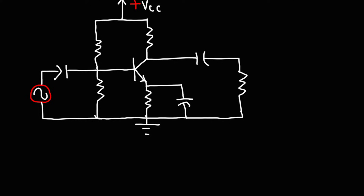In this video, I'm briefly going to review the characteristics of the common emitter amplifier, the common base amplifier, and the common collector amplifier. The amplifier we have here is the common emitter amplifier. The input is applied to the base of the transistor, the output is taken from the collector, but the emitter is common to both the input circuit and the output circuit. So it's called the common emitter amplifier.